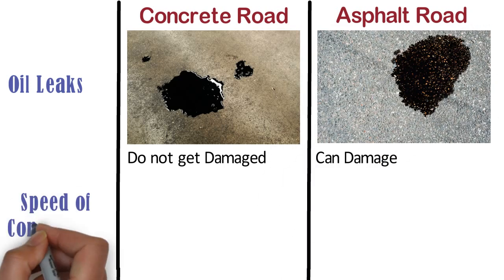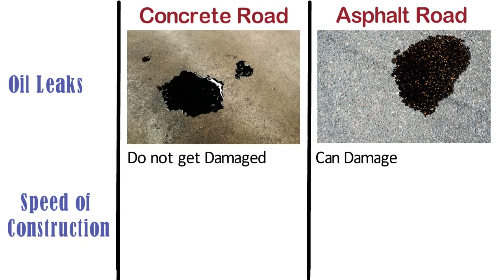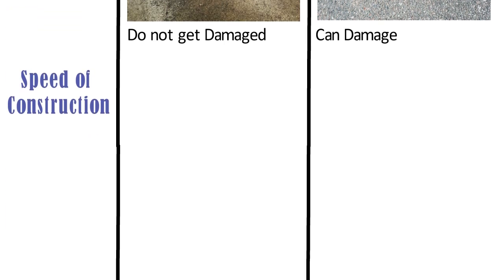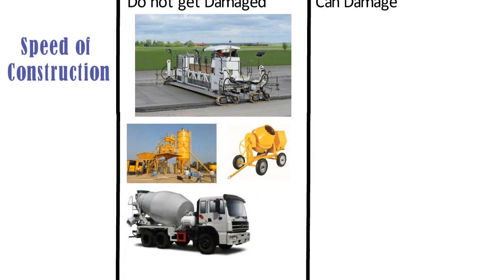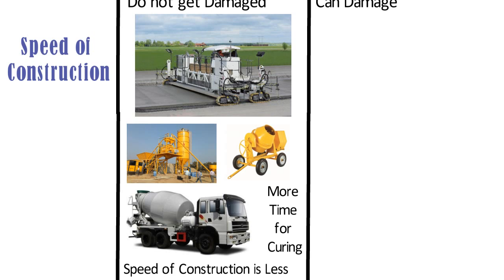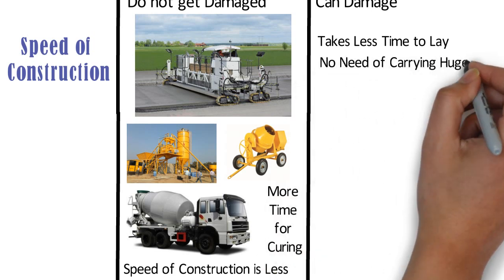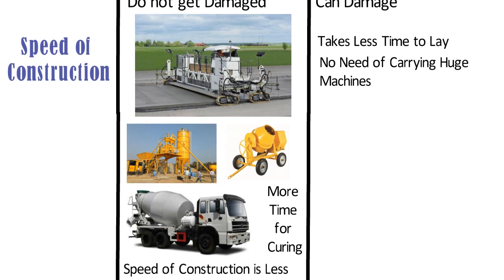Speed of construction. Construction of concrete roads requires machinery such as a concrete paving machine, batching plant or concrete mixer, transit mixers, etc. Also, concrete takes more time for curing, hence the speed of construction is less as compared to asphalt roads. Whereas it takes less time to lay an asphalt road than a concrete road, and there is no need for carrying huge machines like the concrete mixer.